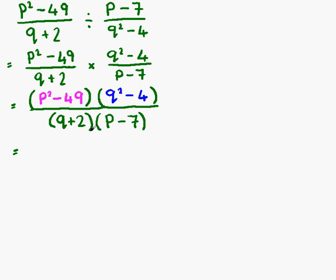So we have p squared minus 49. That can be factorised using a difference of two squares factorisation. P squared minus 49 is the same as p squared minus 7 squared. Our expression is now ready to be factorised.